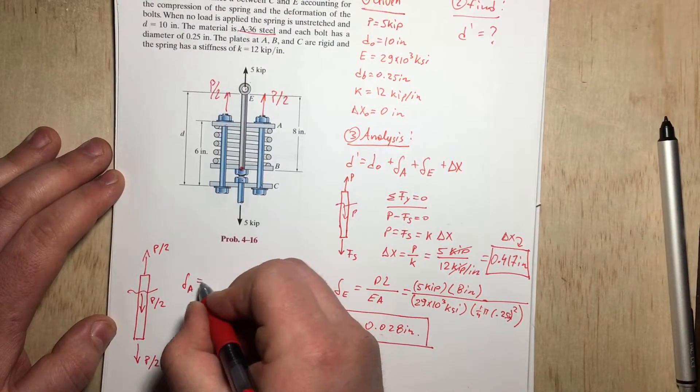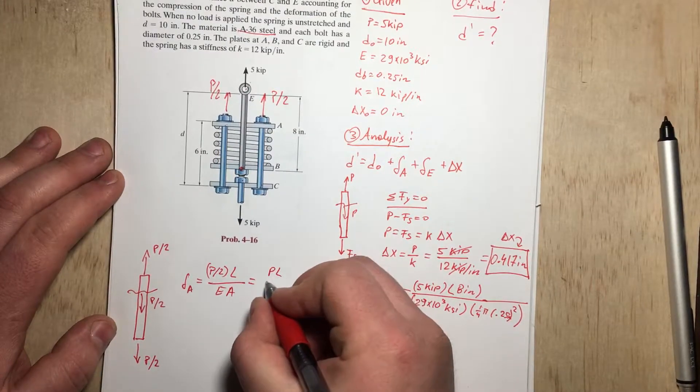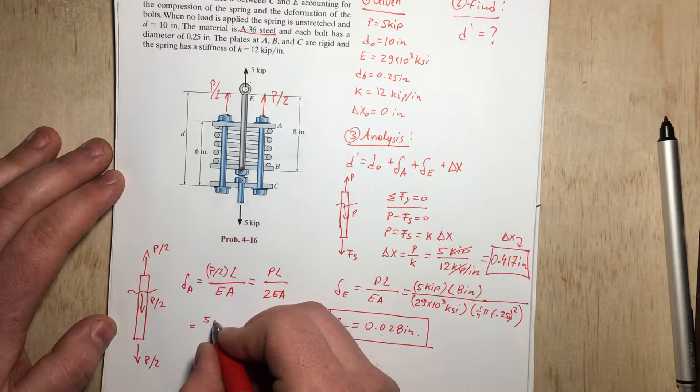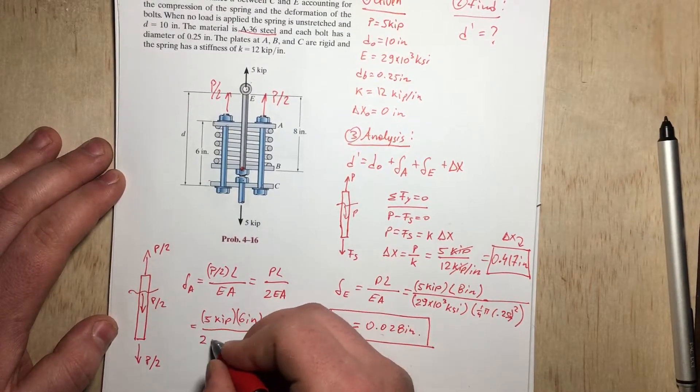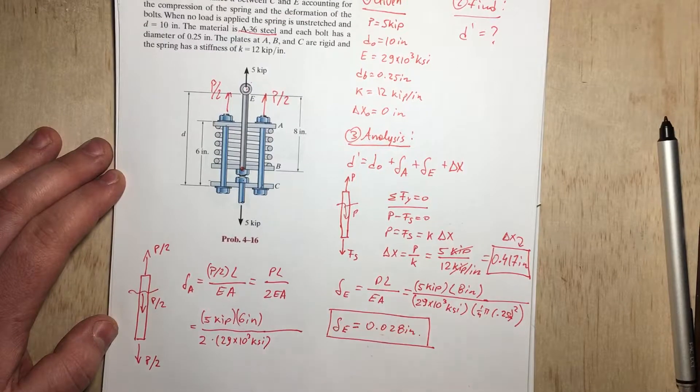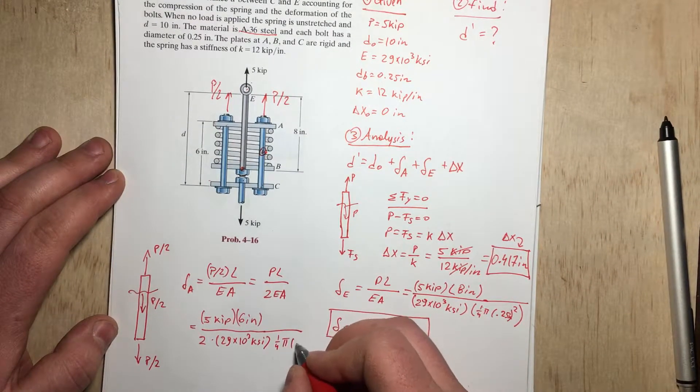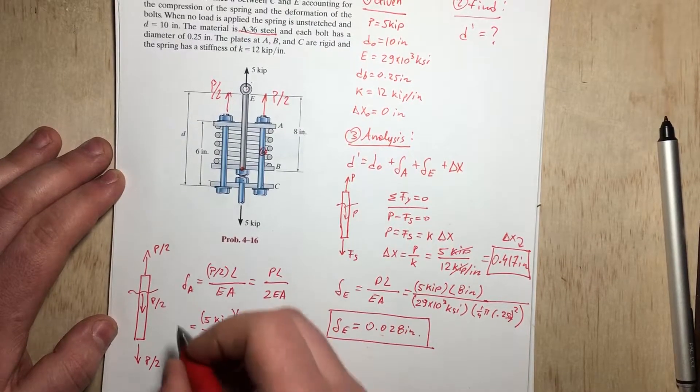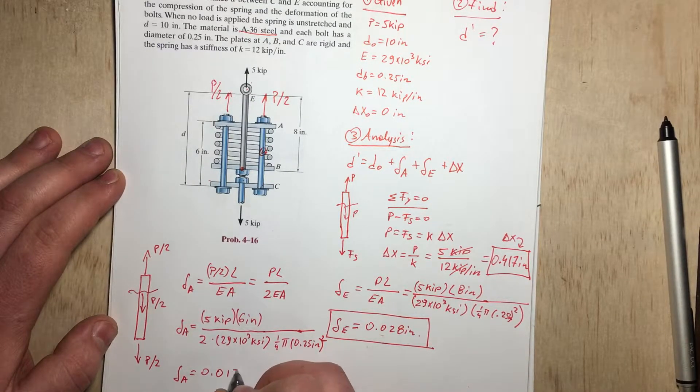Therefore, our delta A is going to be P over 2 times the length of that bolt over EA. In other words, it's going to be PL over 2EA. And if we go ahead and substitute the numbers in, we have 5 kip, times the length, which is 6 inches. We're going to divide by 2 times E, which is 29 times 10 to the 3rd ksi. And also we have the area, which is 1/4 pi times diameter squared, or 0.25 inches squared. If we plug all the numbers in, delta A is going to be 0.0105 inches.